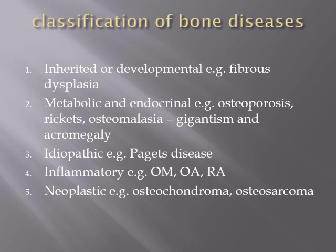The neoplastic category includes either benign or malignant tumors. A benign example is osteochondroma, and a malignant one is osteosarcoma.